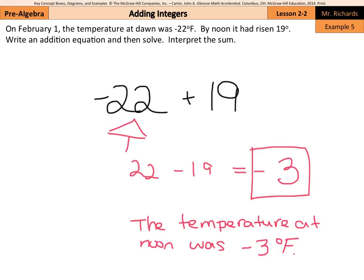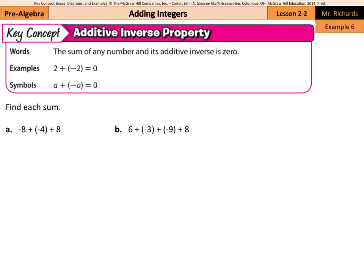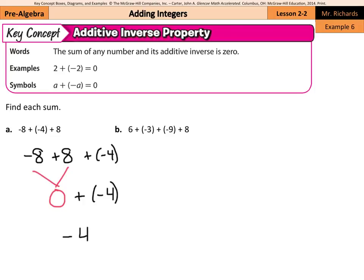Our last example covers the additive inverse property: the sum of any number and its additive inverse is 0. So 2 plus negative 2 equals 0, and a plus negative a equals 0. For example 6a: negative 8 plus negative 4 plus 8. Using the commutative property, rewrite as negative 8 plus 8 plus negative 4. Negative 8 plus 8 is 0, leaving just negative 4 as the answer.